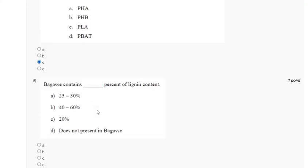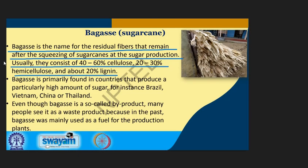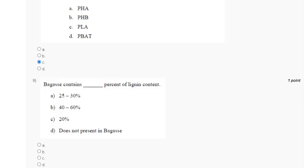Question 9: Bagasse content as percent of lignin content — options: 25 to 30 percent; 40 to 60 percent; 20 percent; does not present in bagasse. Explanation: Bagasse is the residual fiber remaining after squeezing of sugar cane during sugar production. It usually consists of 40 to 60 percent cellulose, 20 to 30 percent hemicellulose, and about 20 percent lignin. The correct answer to question 9 is option C.